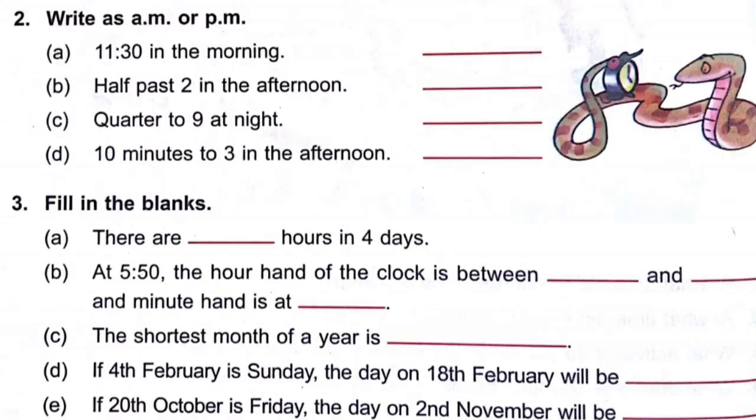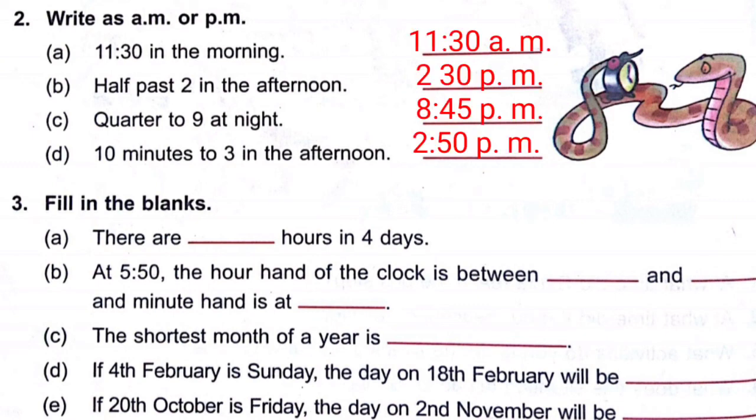Question number 2: Write AM or PM. (a) 11:30 in the morning — AM. (b) Half past two in the afternoon — PM. (c) Quarter to nine at night — 8:45 PM. (d) Ten minutes to three in the afternoon — 2:50 PM.